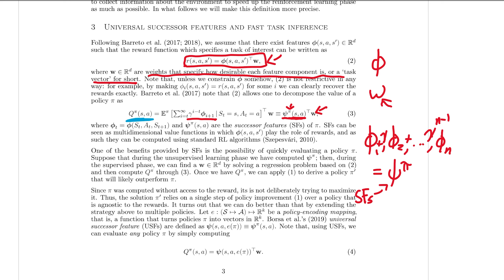Why is this important? This is significant because it means if we can predict the future features we're going to see, then we can predict the Q value. And if we can predict the Q value accurately — say we have three different moves we can make on a chessboard — if we just take the action with the highest Q value, that's going to get us the highest reward. To summarize: if we assume rewards are the dot product of phi and the task vector w, then if we can predict future features, we can get the Q value. And if we have the Q value, we know which action is going to be best.